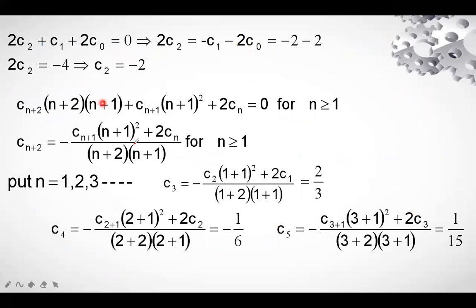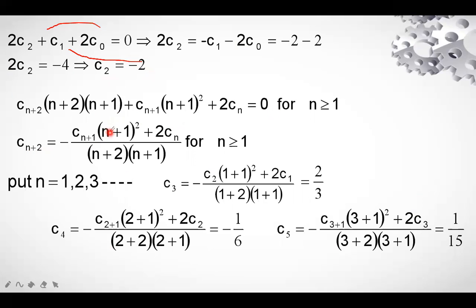From the constant term equation: 2c₂ = −c₁ − 2c₀ = −2 − 2(1) = −4, so c₂ = −2. From the recurrence relation (general term equated to zero), we get c_(n+2) in terms of earlier coefficients. Substituting n = 1, 2, 3, … gives c₃, c₄, c₅, and so on. We already know c₀ = 1, c₁ = 2, and c₂ = −2.